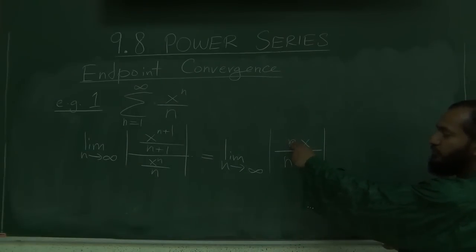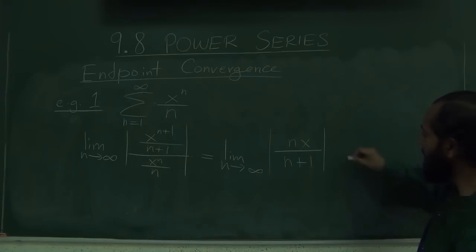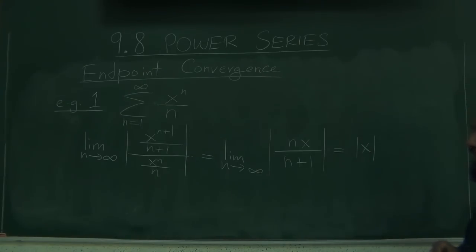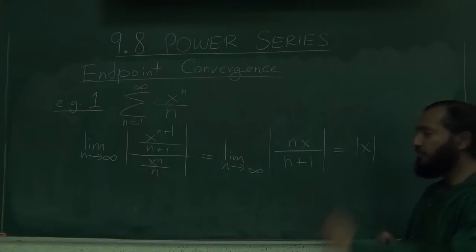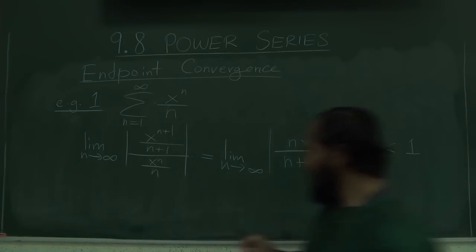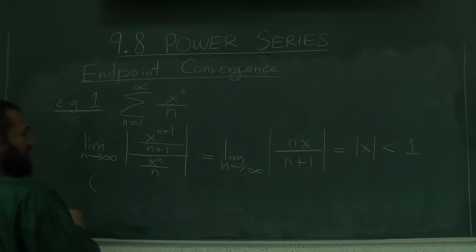Now, when n goes to infinity, of course, the ratio of n and n plus 1 goes to 1. So this just happens to be |x|. And ratio test, what are the criteria for convergence if it's less than 1? So we want this to be less than 1 and that right away tells you that for sure things in here converge.